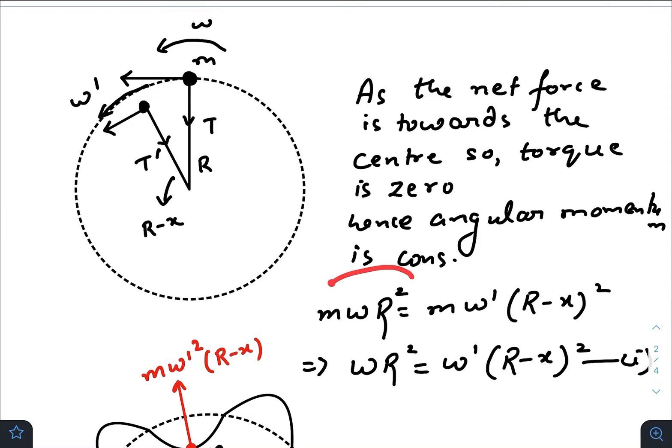So initial angular momentum which is M omega R squared will be equal to the final angular momentum, which is M omega prime times R minus x whole squared.